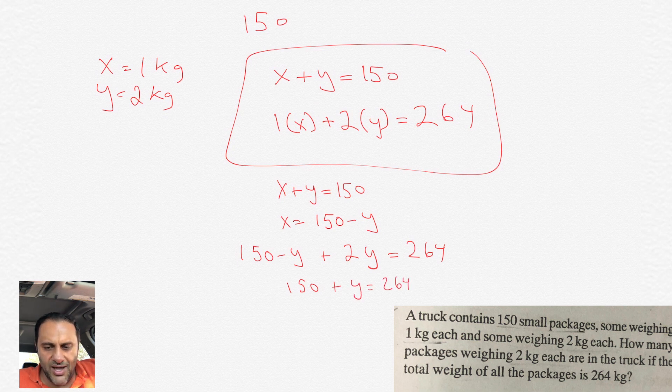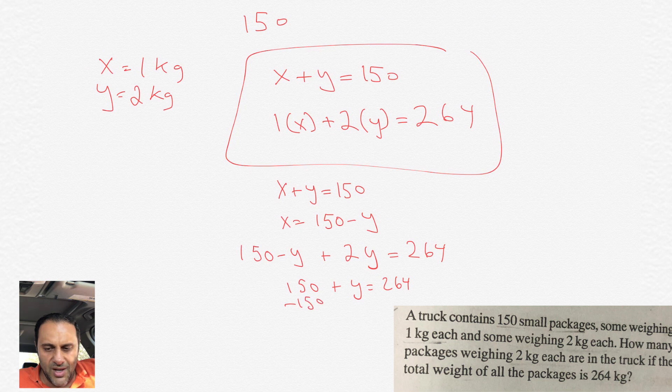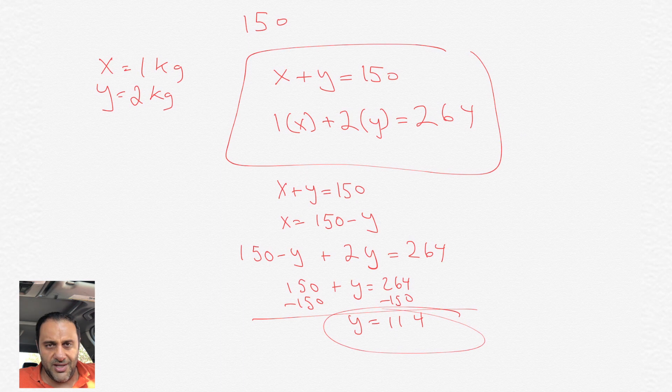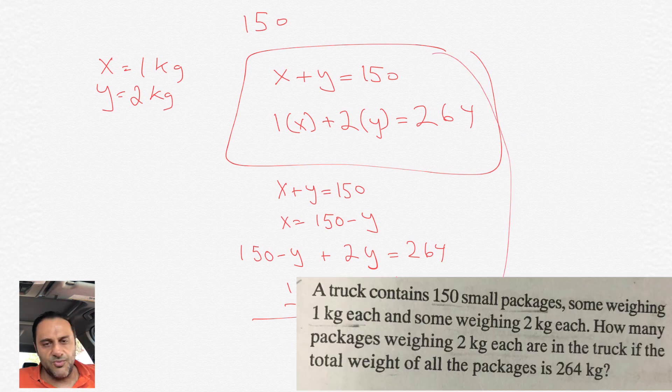We will end up with 150 minus Y plus 2Y equals 264, and then the negative Y and 2Y adds up to just plus Y. So then we have 150 plus Y equals 264. Subtract 150 to each side, we then get Y equals 114, and that's actually the answer because the question was asking for how many 2 kilogram packages we have.